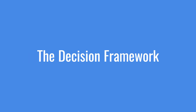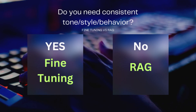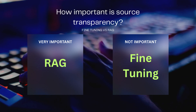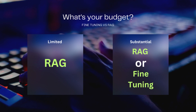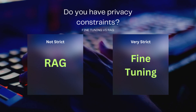Here's a decision framework. Does your knowledge base change frequently? Yes → choose RAG. No → choose fine-tuning. Do you need consistent tone and style? Yes → choose fine-tuning. No → choose RAG. How important is source transparency? Very important → choose RAG. Not important → choose fine-tuning. What's your budget? Limited → choose RAG. Substantial → you can choose either. Do you need inference speed? Yes → choose fine-tuning. Some latency is acceptable → choose RAG. Do you have privacy constraints? Very strict → choose fine-tuning. Normal constraints → choose RAG.